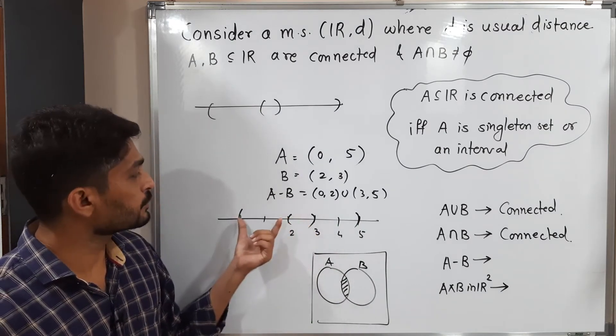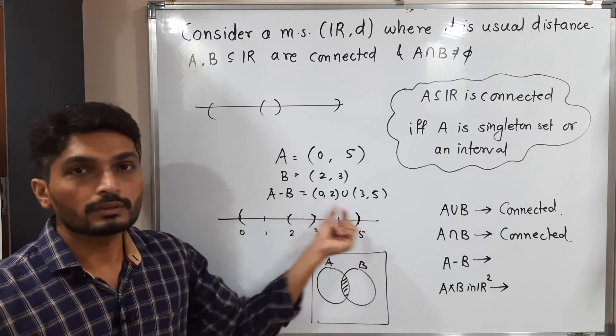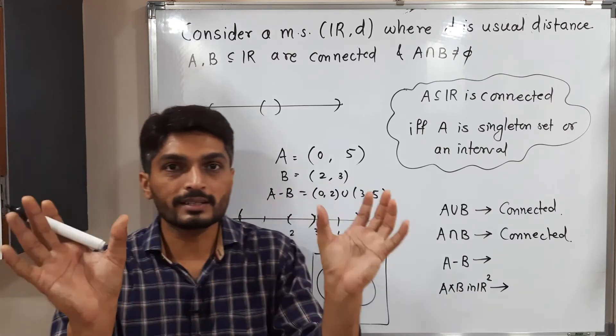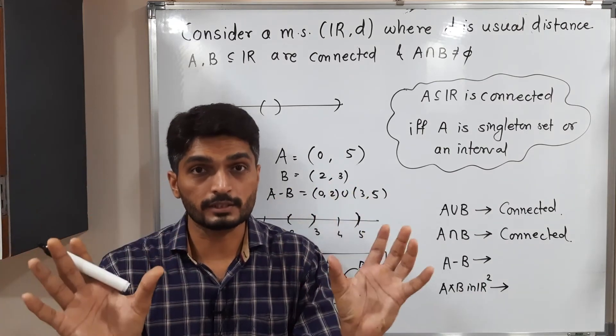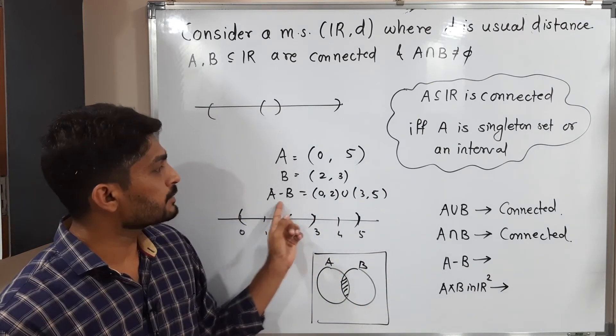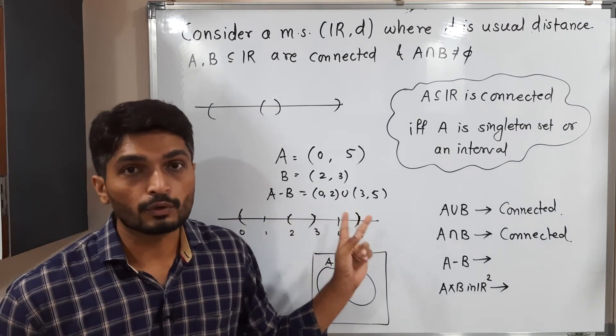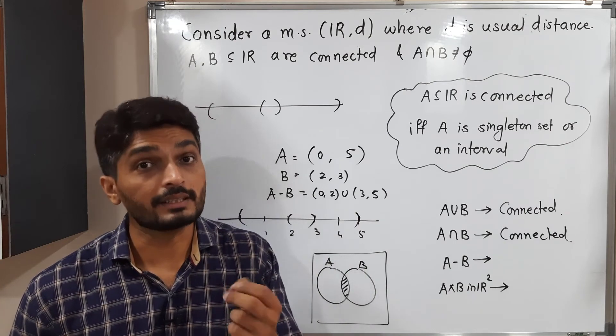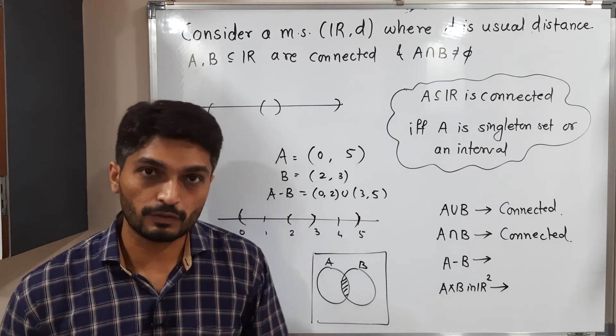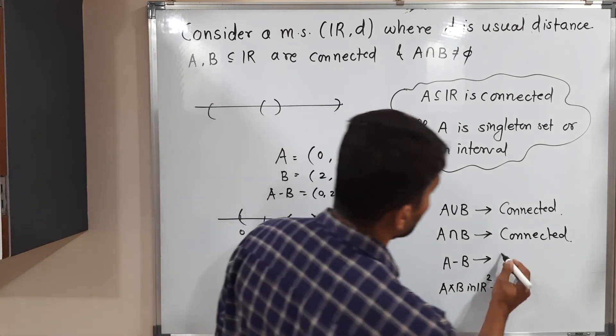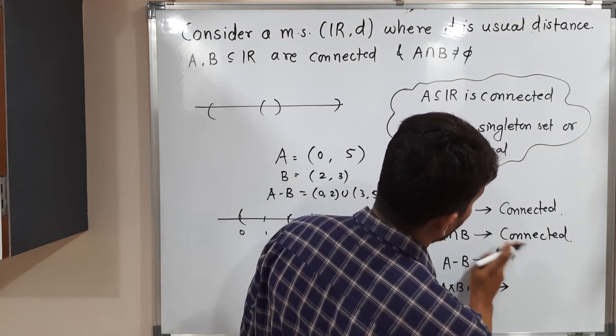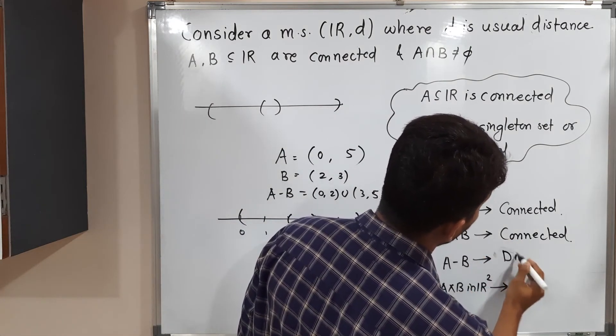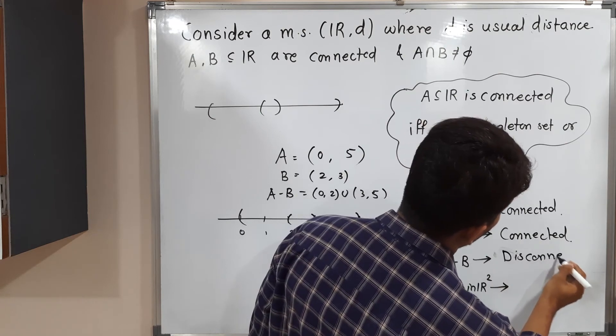So the resultant part will be this one union this one. These two are separated. These two are open sets. So A minus B is expressed as union of two non-empty open sets. Therefore, A minus B is disconnected. This is the equivalent definition of disconnected metric space. So A minus B is disconnected.